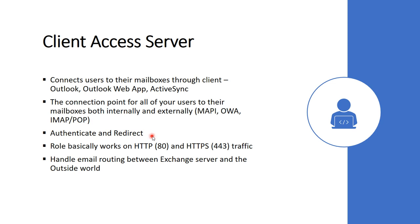The Client Access Server authenticates and redirects those requests to the appropriate Mailbox Server. This role basically works on HTTP and HTTPS traffic for client connectivity and web services. It handles email routing between the Exchange Server and the outside world. The front-end transport service running on the Client Access Server performs various email traffic filtering as well as email routing between the Exchange Server and outside the world.